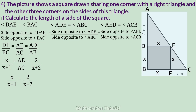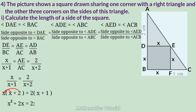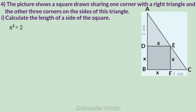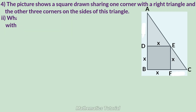Cross multiplying: x(x+2) = 2(x+1), that is x² + 2x = 2x + 2. The 2x cancels from both sides, giving x² = 2, so x = √2 cm. The side of the square is equal to x, that is √2 cm.